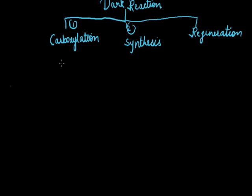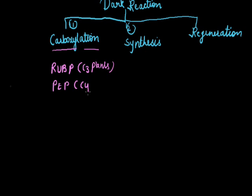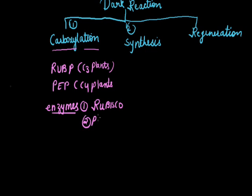In the carboxylation process, carbon dioxide is captured by carbon dioxide acceptors in the presence of enzymes known as Rubisco and PEPCO. In the second step of dark reaction, the captured carbon dioxide is assimilated into glucose in the presence of phosphatase and isomerase enzymes, and ribulose bisphosphate, that is RUBP, is regenerated back.